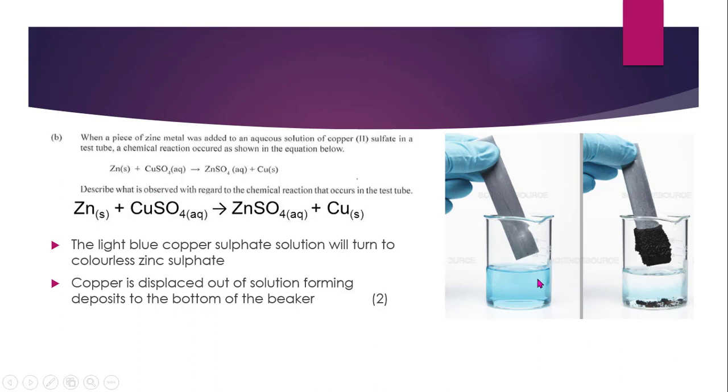This is what it looks like before and after. Zinc is silver and copper sulfate is light blue. When you add the zinc to the copper sulfate, it's going to be converted to zinc sulfate and solid copper. Zinc sulfate is clear or colorless and copper is actually brown, pinkish brown. These are the 2 observations that I want you to know to get those 2 full marks. Light blue to colorless, that is for copper sulfate, and also copper is being displaced out of solution forming deposits to the bottom of the beaker. I also uploaded a video a couple days ago so you can see exactly what it looks like when the reaction is taking place.